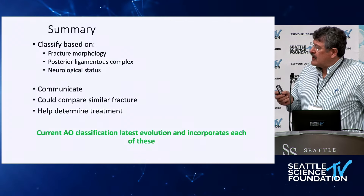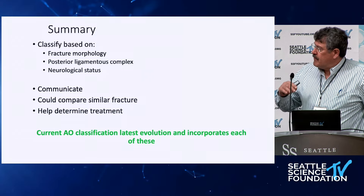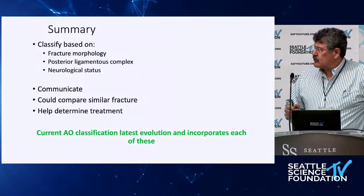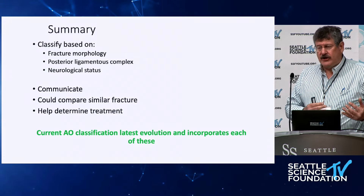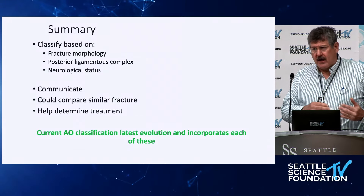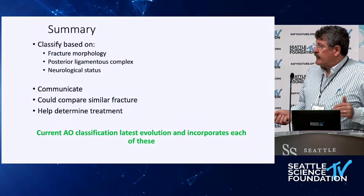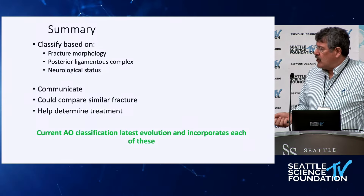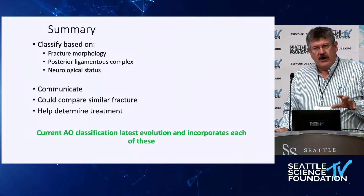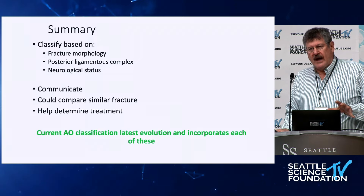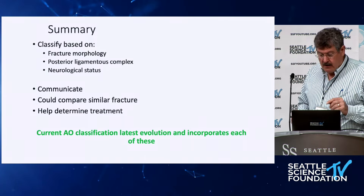The classification is based on fracture morphology, posterior ligamentous complex, and neurological status. We can use it to communicate, compare similar fractures in study — we can compare all A3s, or A3s to A4s. It helps determine treatment, and I really think this latest evolution is here to stay. It answers all those questions for us, and I think it's going to be hard to top it. Thank you.